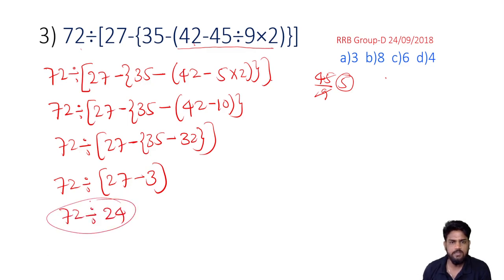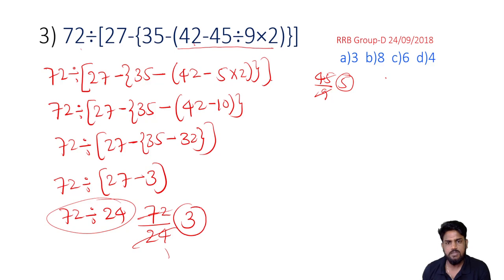72 divided by 27 minus 3 is 24. 72 divided by 24.